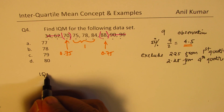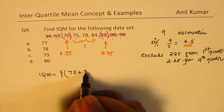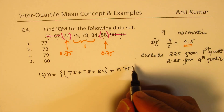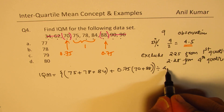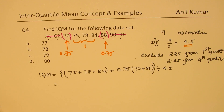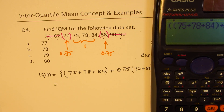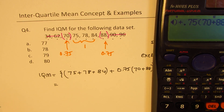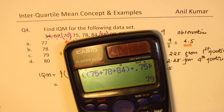For the boundary terms (70 and 88), we include 0.75 weight each. The three central values (75, 78, 84) have full weight. So: 1 + 0.75 + 0.75 = 4.5. Interquartile mean = (75 + 78 + 84) + 0.75 × (70 + 88), divided by 4.5. The answer is 79.